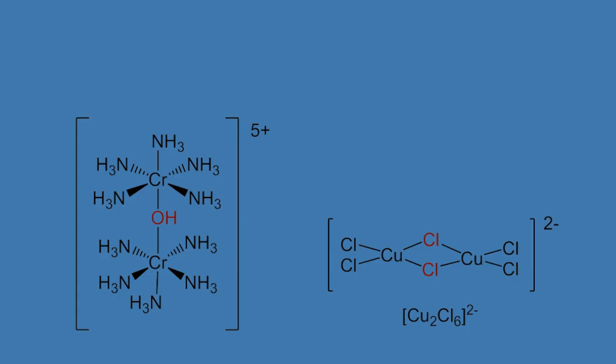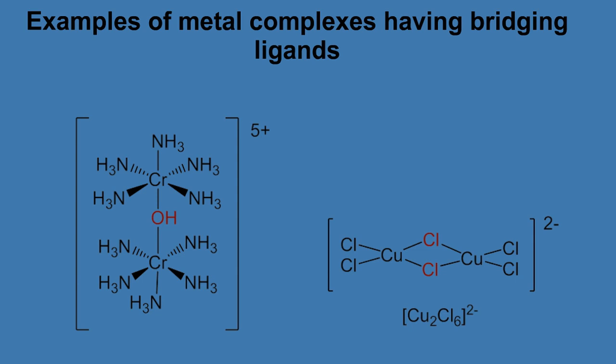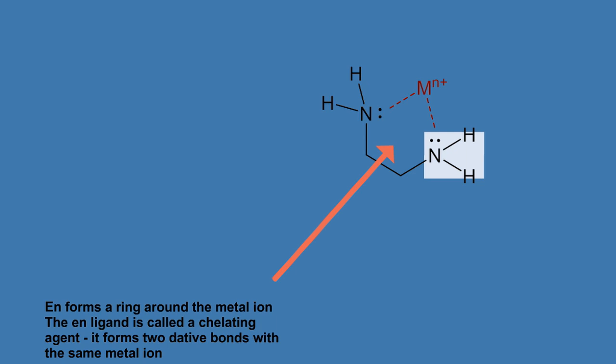The bidentate ligand, 1,2-diaminoethene, or ethylenediamine. Ethylenediamine forms a ring around the metal ion. The ethylenediamine ligand is called the chelating agent. It forms two dative bonds with the same metal ion.